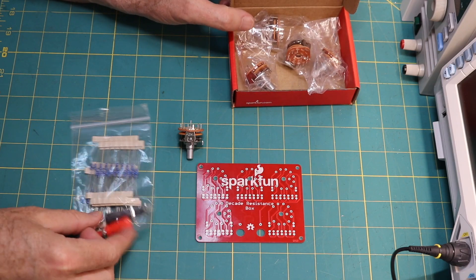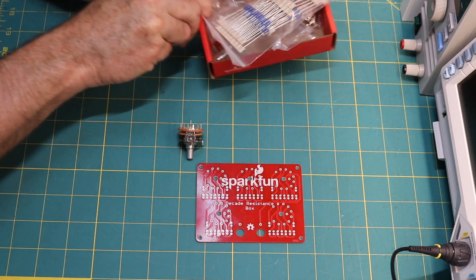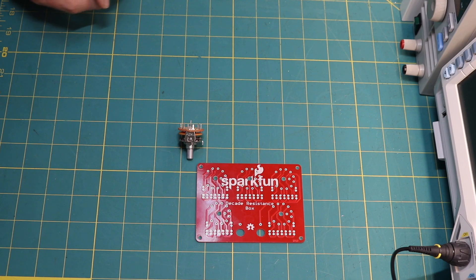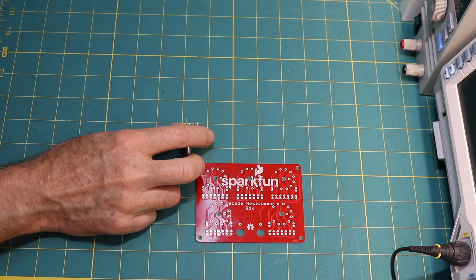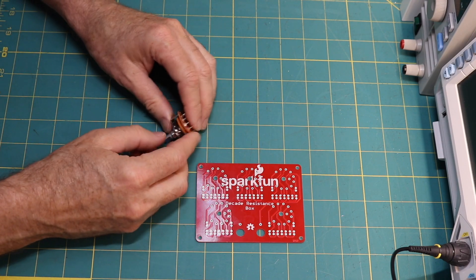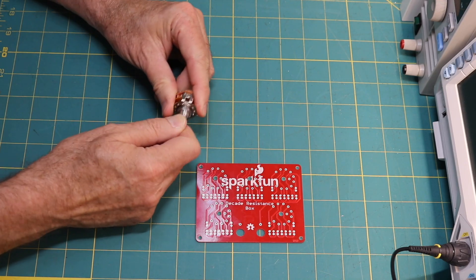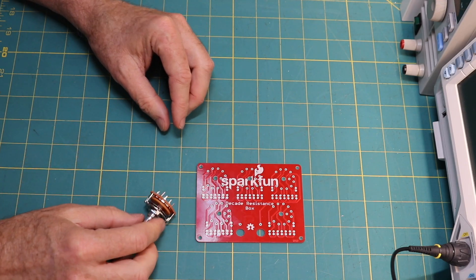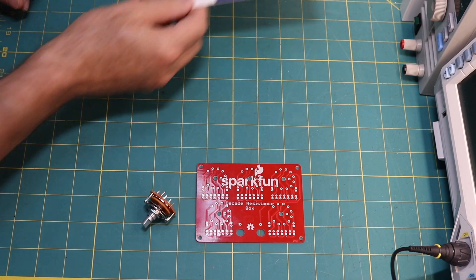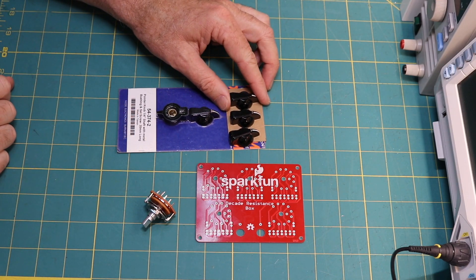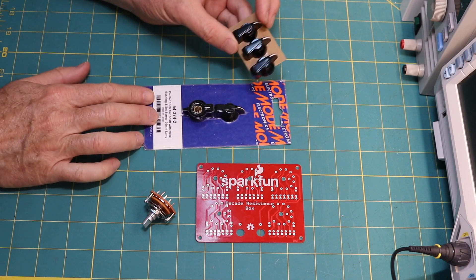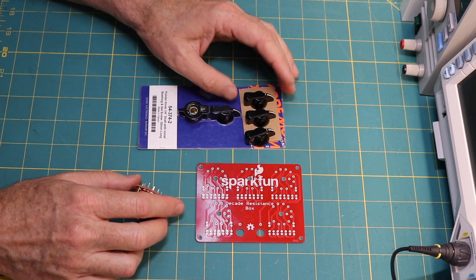But it is missing a couple of things that you really do need. They mention it in the description. These knobs I can't twist with my bare fingers, so you're going to need knobs. I picked these up at the local electronics store, and those will be my knobs.